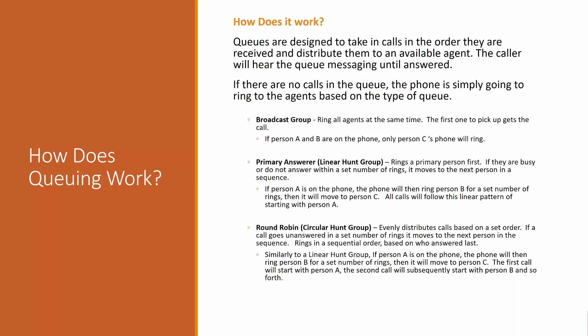The next approach is primary answer — you have one person you really want answering calls, and it always starts with person A. If A is on the phone, it engages person B after a set number of rings, then moves to person C if B doesn't pick up. All calls follow the same pattern, always starting with A. This suits a reception area where you have a primary receptionist and a backup you only want to engage when necessary.